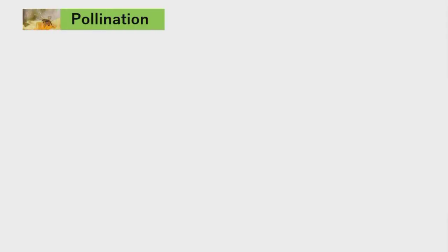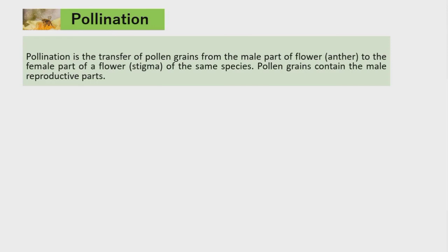Let us discuss pollination. Pollination is the transfer of pollen grains from the male part of the flower, which is the anther, to the female part of a flower, which is the stigma, of the same species. Pollen grains contain the male reproductive parts.